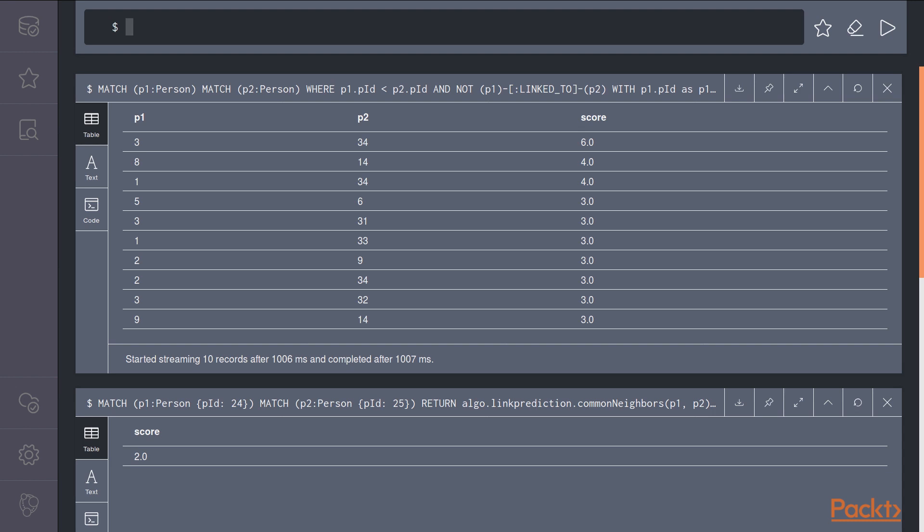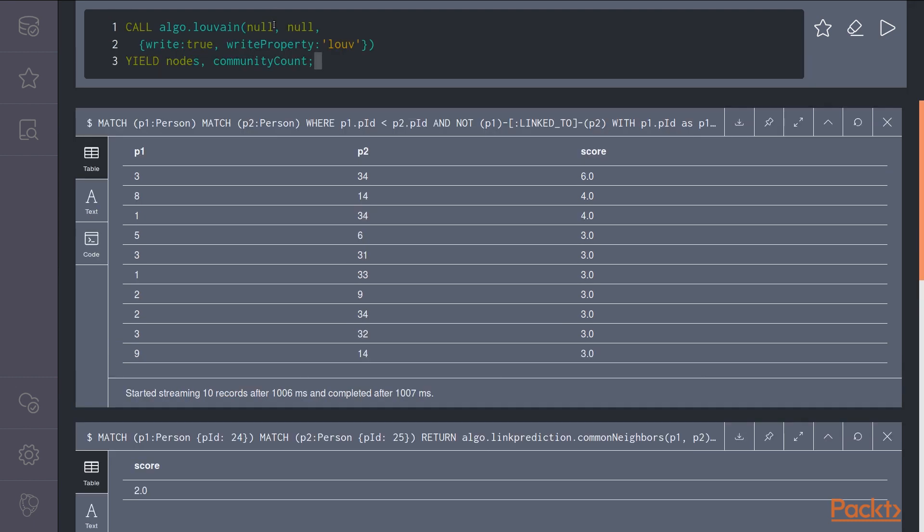Last algorithm we will talk about in this video is the same community algorithm, returning one if two nodes are in the same community and zero otherwise. It requires a community property to exist for each node, meaning that a community detection algorithm has to be run and its results written back in the graph. Let's use for this the Louvain method. So we will compute the Louvain score for all nodes in the graph and write the result into a property which is called Louv.